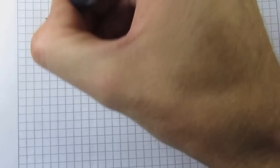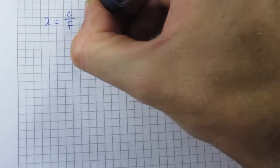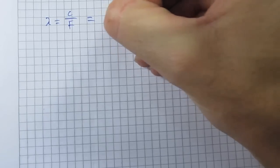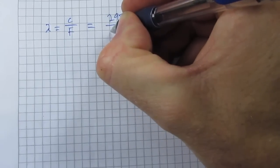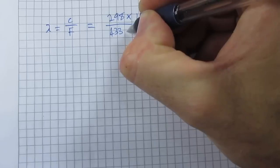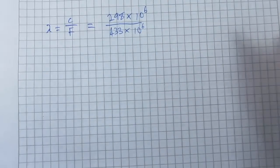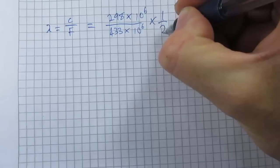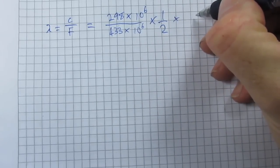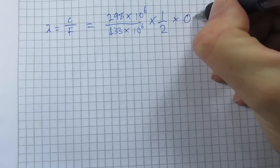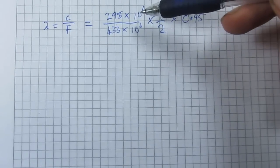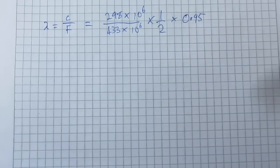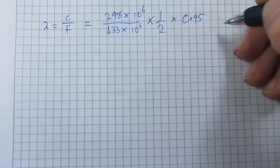Let's quickly go over the mathematics on calculating the actual wavelength. So we've got wavelength equals speed of light divided by our frequency. The speed of light is 298 by 10 to the 6 divided by our frequency, which is 433 megahertz, multiplied by 10 to the 6. Because we're calculating for a half wavelength, we'll stick a half in there. And also, I'm going to put in a velocity factor of 0.95. That's just to account for the change of the speed of electricity in metal, basically.